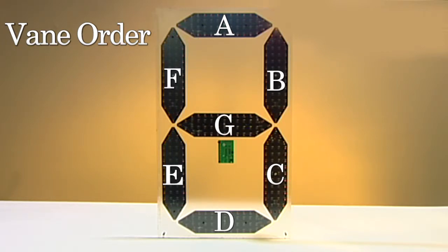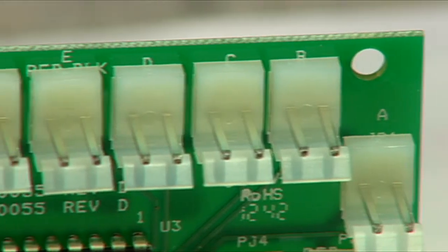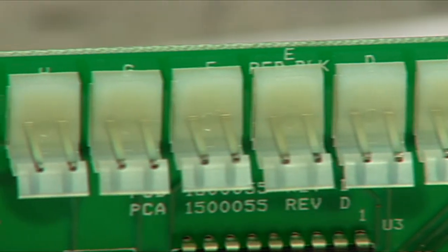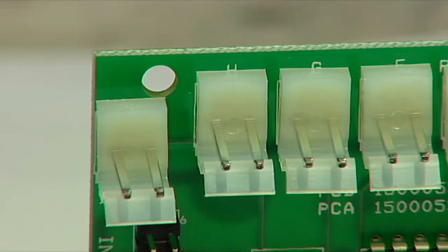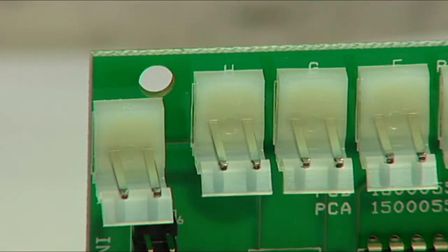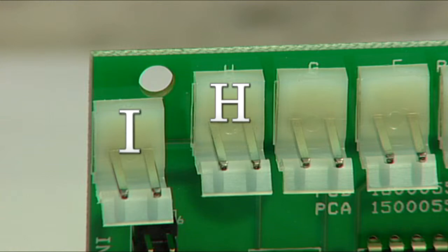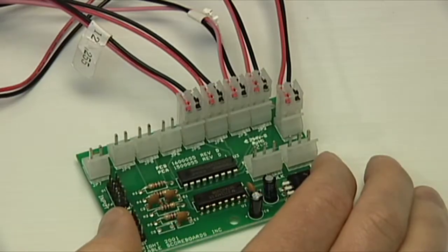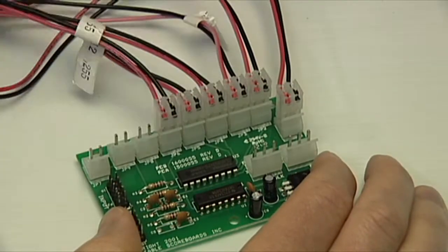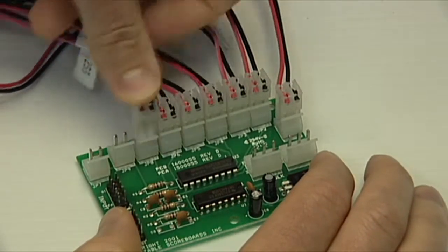These letters match up with the driver board, which has the same letters printed on the board. There are two additional connectors on the driver, labeled H and I. These connections are used for additional scoring features. Use only the A through G vane connections for the seven vanes on a digit.